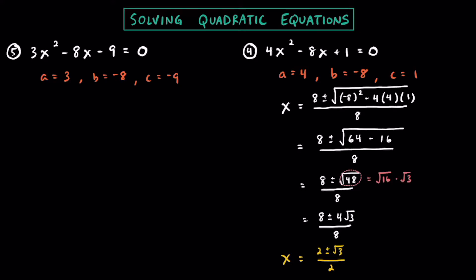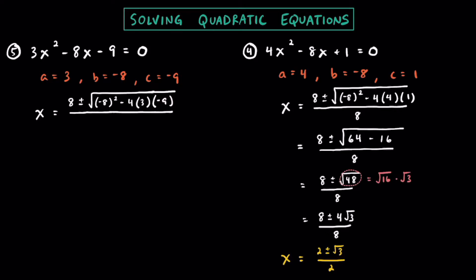Don't forget those negatives. Let's plug this into the quadratic formula. So we have x equals the opposite of b — the opposite of negative 8 is positive 8 — plus or minus the square root of b squared, that's negative 8 squared, minus 4 times a which is 3 times c which is negative 9, all over 2a. Since a is 3, 2 times 3 is equal to 6. Simplifying: 8 squared is 64, negative 8 squared is positive 64, and then negative 4 times 3 is negative 12, and negative 12 times negative 9 is plus 108, all over 6.